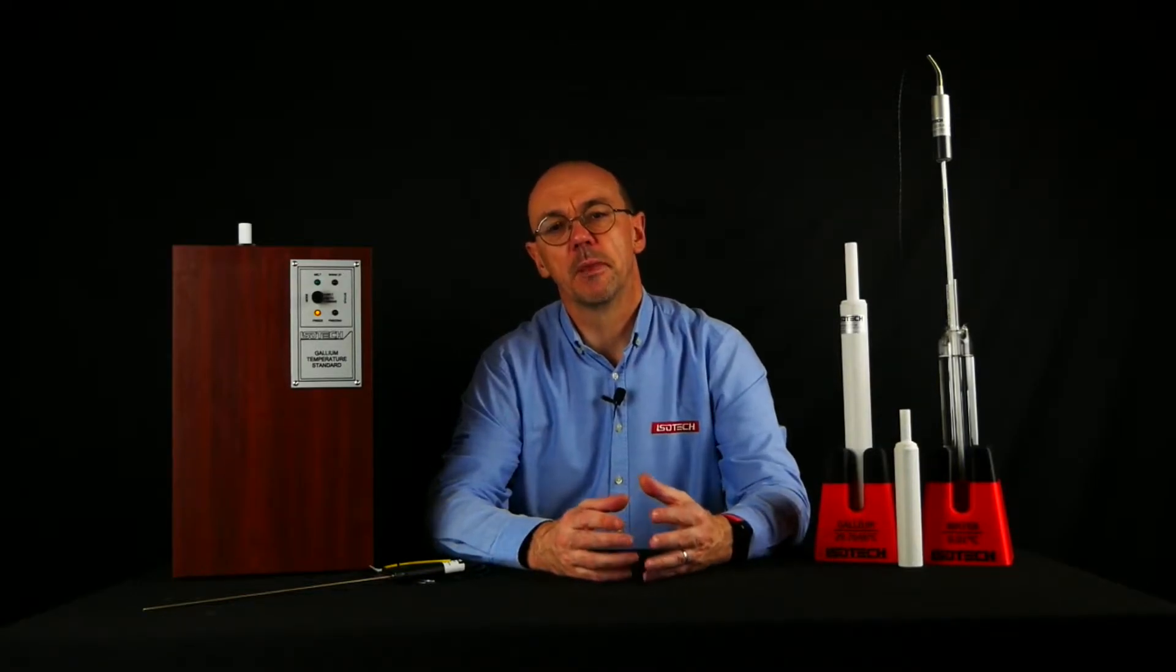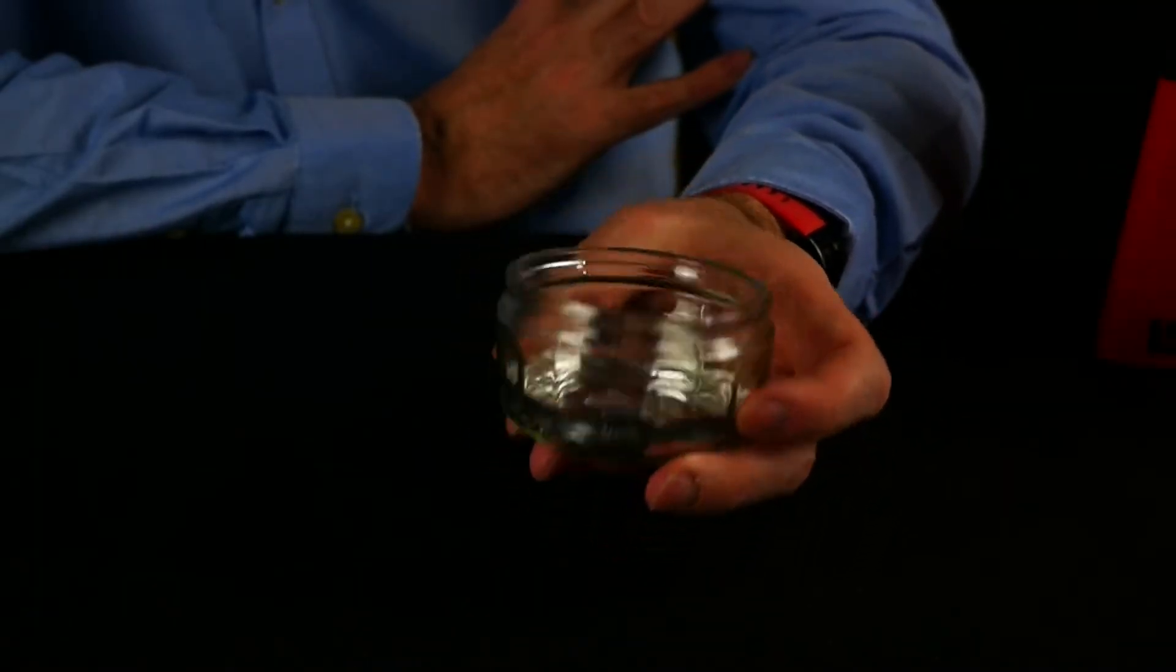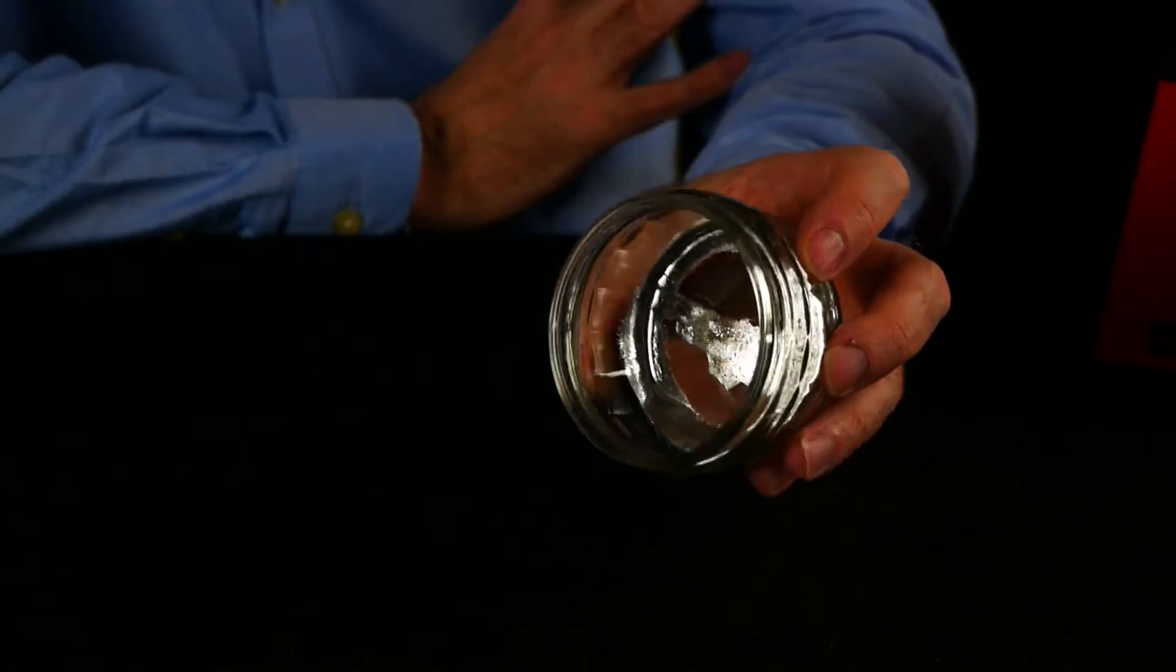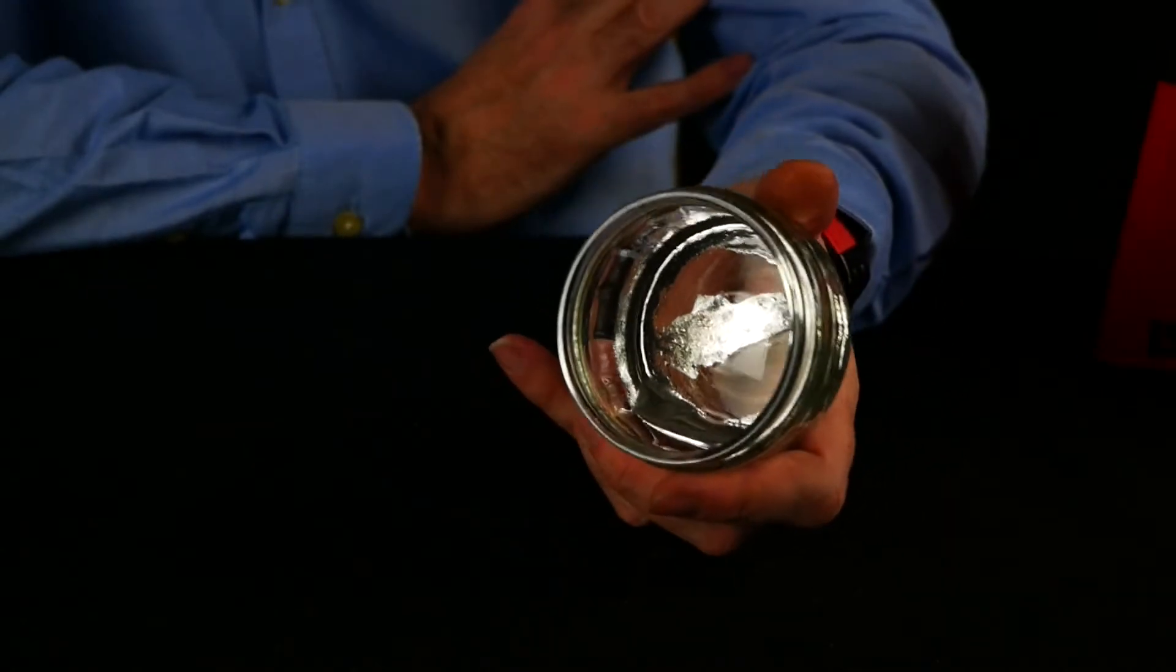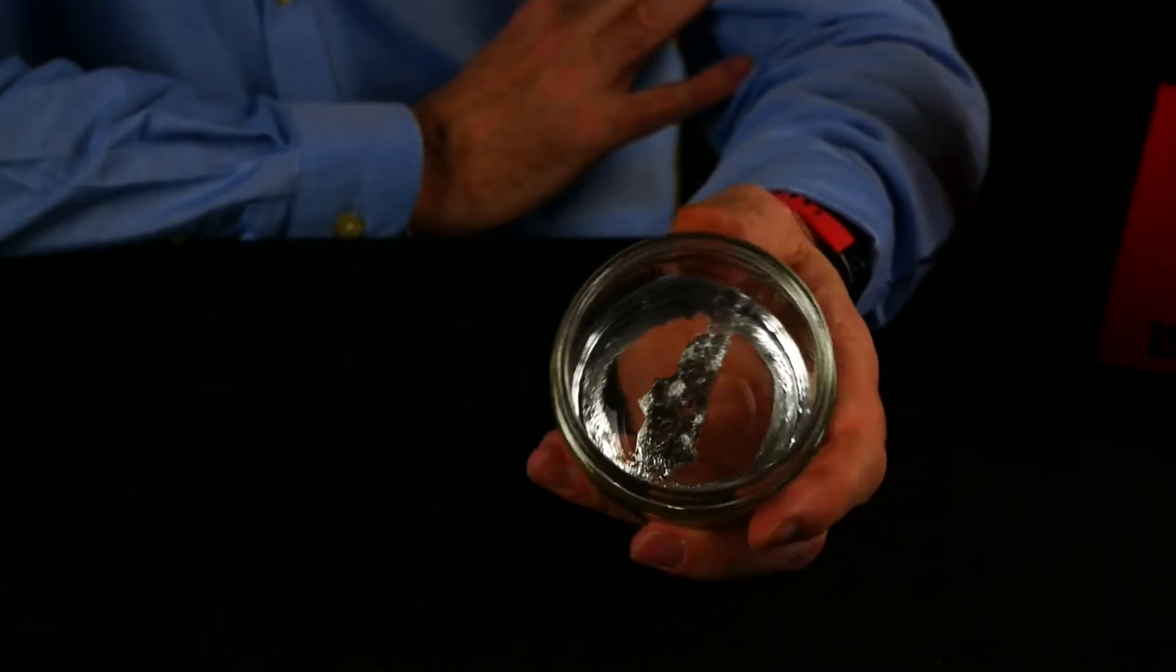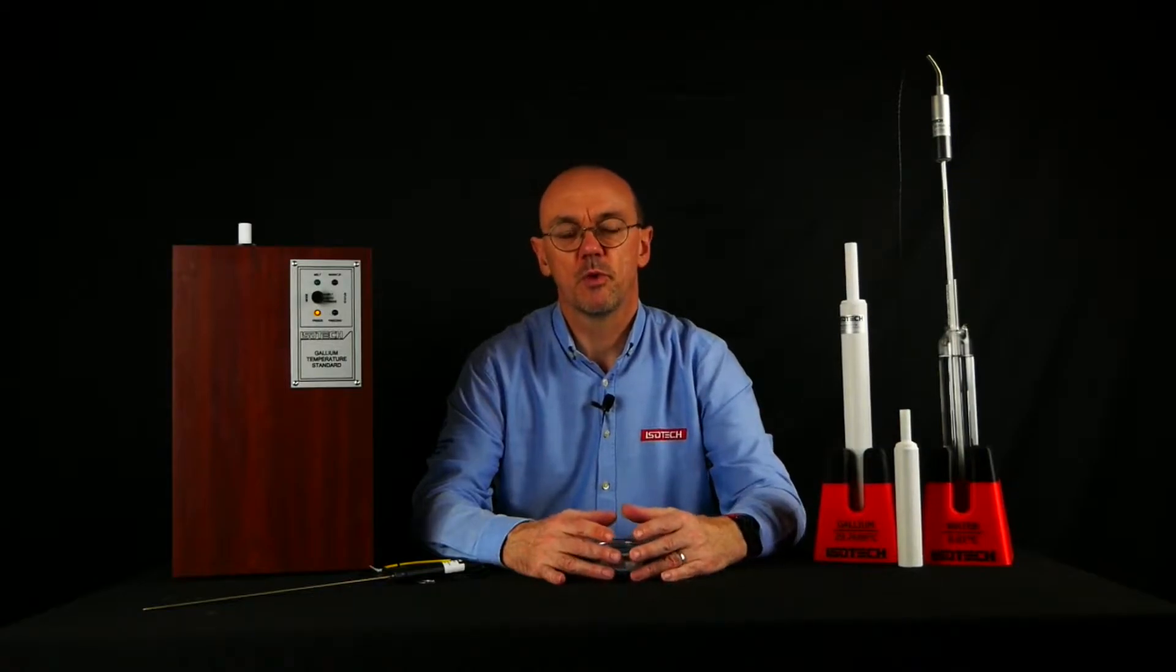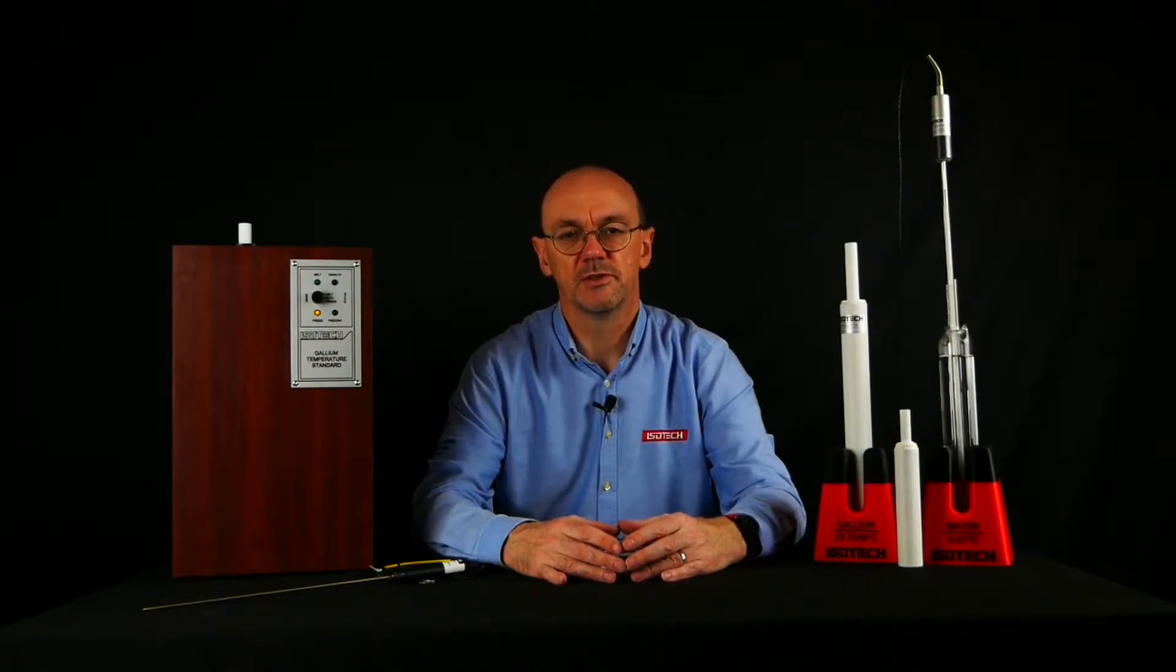Gallium is a metal with a low melting point. It melts at 29.7646 degrees Celsius. Here I've got some gallium which is in the liquid phase. Gallium is fairly easy to obtain at high purity and it's used in the semiconductor industry. It's also one of the defining points on the International Temperature Scale of 1990, ITS-90.